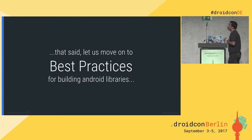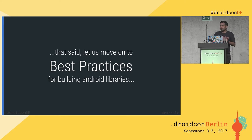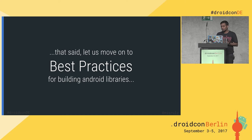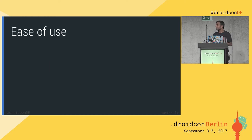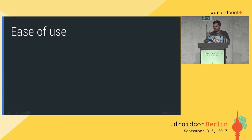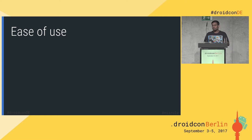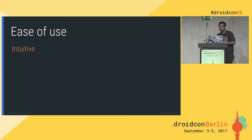With that said, let's move on to best practices for building Android libraries. Before I start talking technical stuff, I want to mention a few aesthetics about how and why a particular type of Android library should be built. It starts with ease of use. The code that is reusable should be very easy to use, and it needs to follow three simple rules. The first is that it should be intuitive — it should do exactly what it says it's going to do.